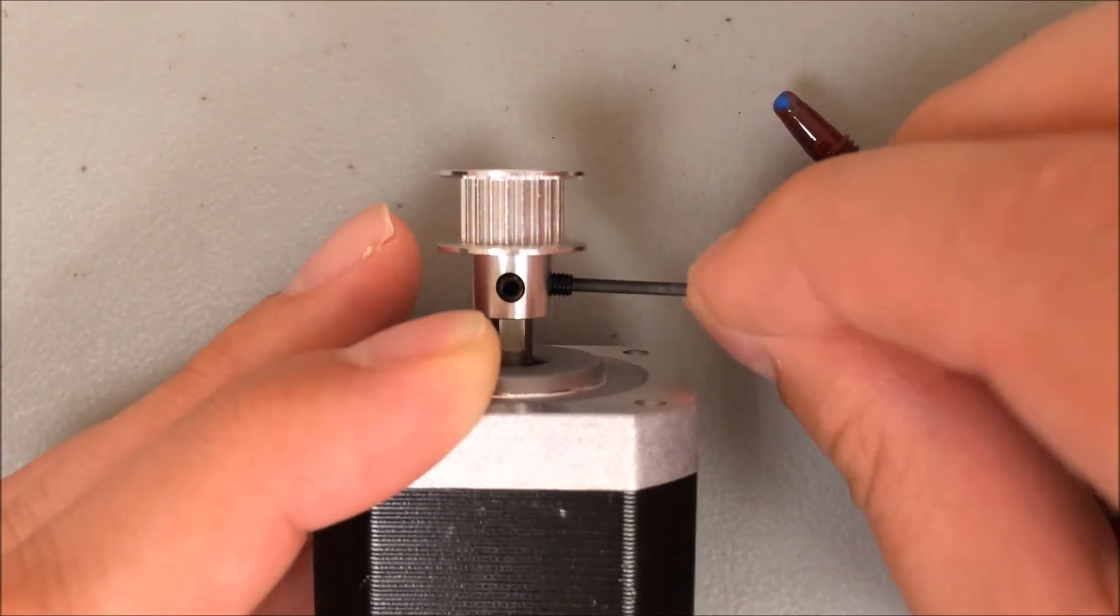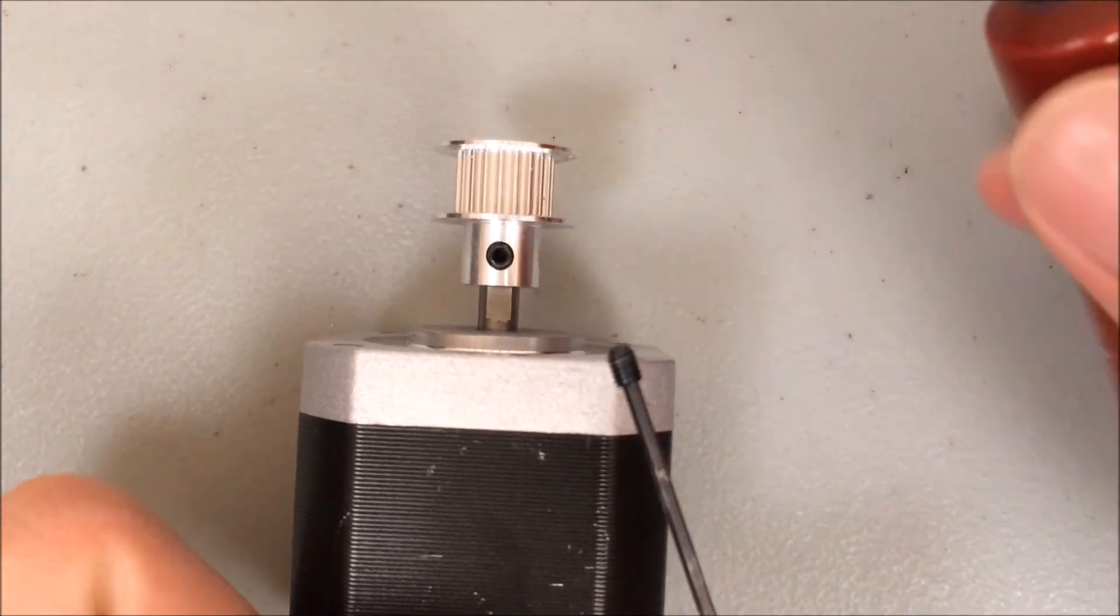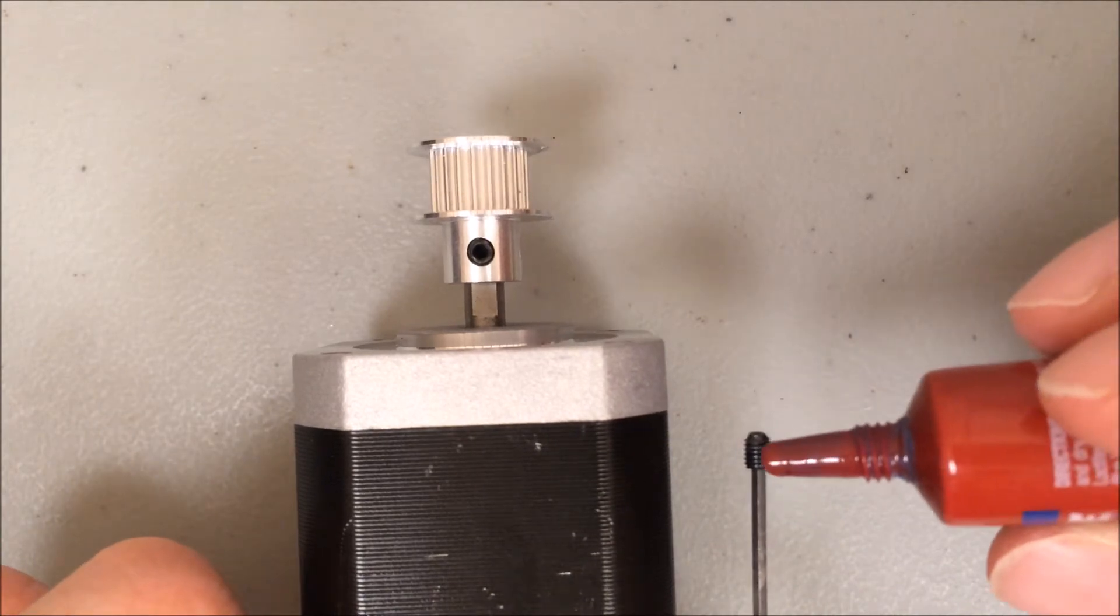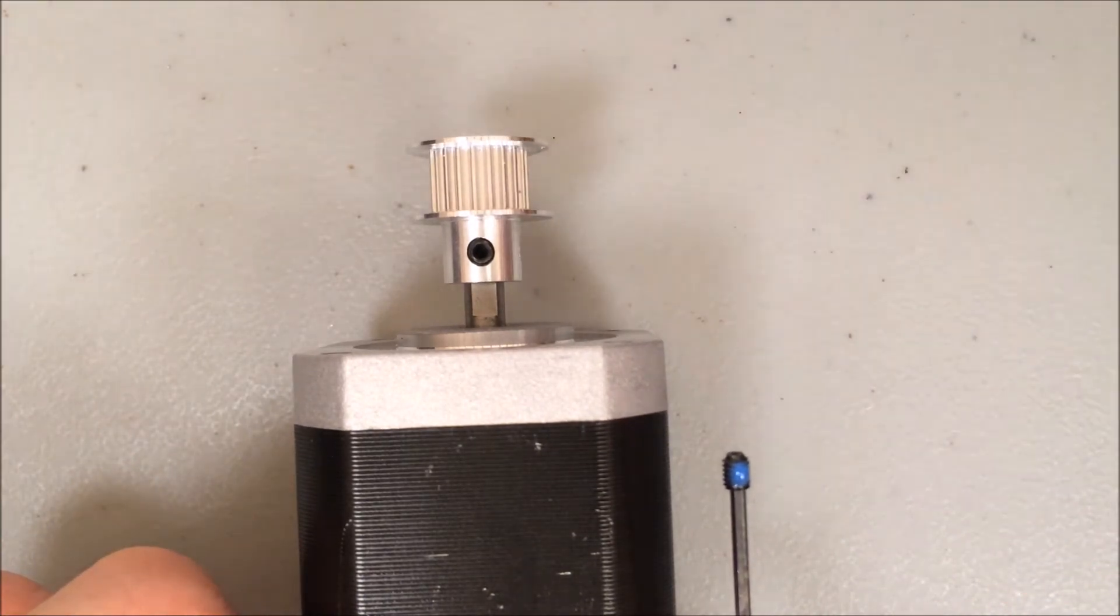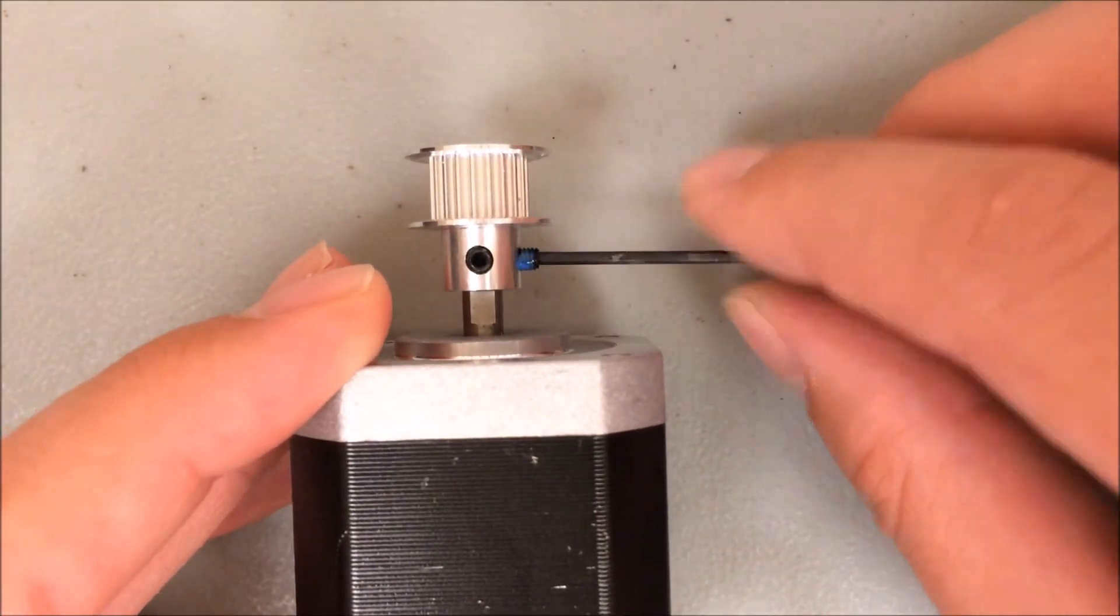So go ahead and take out one of the set screws. I'm just going to leave it on the end of the Allen wrench here and apply some threadlocker into those threads. You don't need a lot, just a little bit. All I do is put one little drop and now I'm going to put it right back into the side of the pulley.